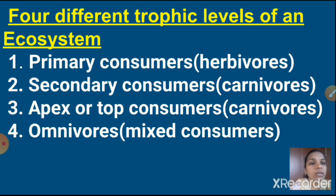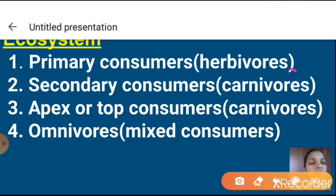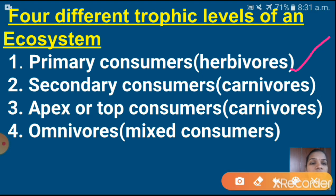Next one is four different trophic levels of an ecosystem. In our ecosystem there are four important trophic levels. First one is primary consumers, which are known as herbivores. Next one is secondary consumers, otherwise called carnivores. Next one is apex or top consumers, also known as carnivores. Fourth one is omnivores, otherwise called mixed consumers.